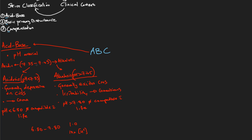To summarize: the acid-base status of the arterial blood gas looks primarily at the arterial pH. The normal range is 7.35 to 7.45. Less than 7.35 is acidosis, which generally has a depressive effect on the CNS — it can lead to decreased consciousness, drowsiness, coma, and death; below 6.8 is not compatible with life. Above 7.45 is alkalosis, which has an excitatory effect on the CNS — leading to irritability, convulsions; above 7.8 is not compatible with life. For short periods these extremes may be tolerated if quickly corrected, but extended periods lead to very poor outcomes.